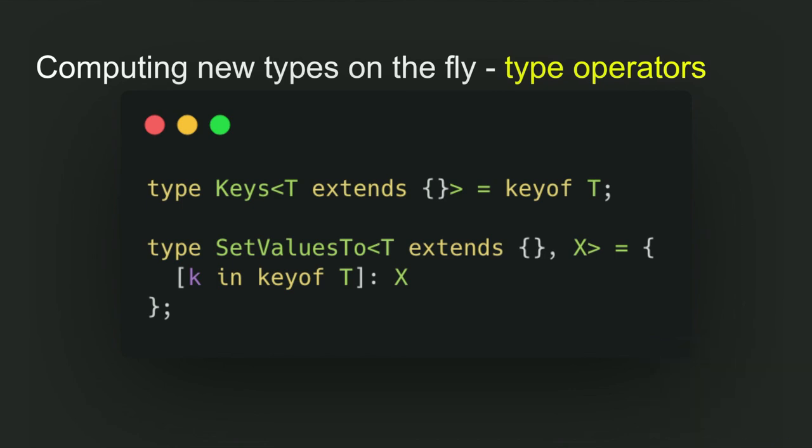So for this very empty object, this would be just never. There is nothing in there. It's the empty set. But if we have this x number example, this would be just x, the string literal x.